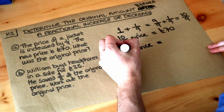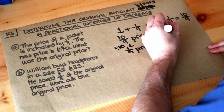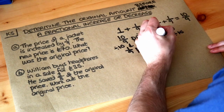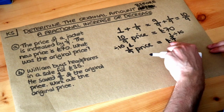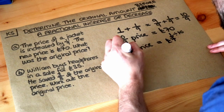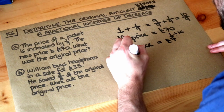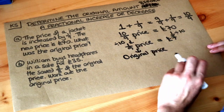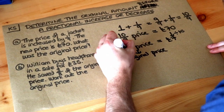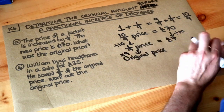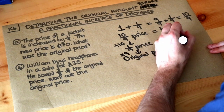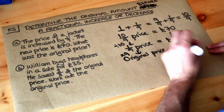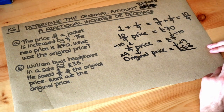To get from ten ninths to one ninth we're dividing by ten, so we divide £70 by ten, which gives us £7. So one ninth of the original price is £7. Then to find the original price — a whole amount of it — we need to multiply by nine, since a whole is nine times bigger than a ninth. Seven pounds times nine is £63, so the original price is £63.